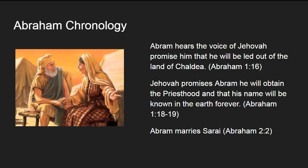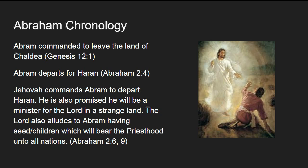After this, Abram hears the voice of Jehovah promise him that he will eventually be led out of the land of Chaldea. Jehovah also promises Abram that he will obtain the priesthood and that his name will be known in the earth forever. Sometime during this time he marries Sarai and begins a new life with her. Finally, Abram gets the commandment to leave Chaldea and goes to Haran, where Jehovah then commands him to depart. As he departs, he's given a promise that he will be a minister for the Lord in a strange land, and that his seed will bear the priesthood unto all nations.